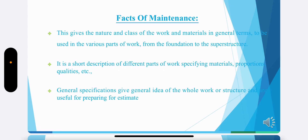The factors of maintenance mainly include: improving the durability of the structures, improving the strength of the structures, retaining the structures, resisting the total load, controlling the cracks, and creating a safer environment for living in the house. So these are the main factors of maintenance.